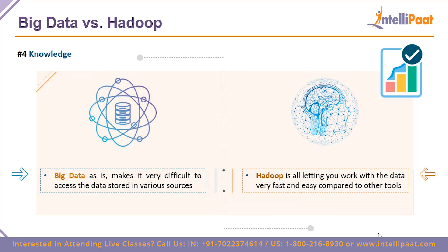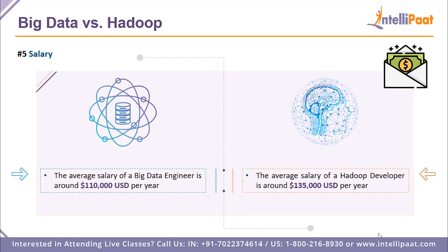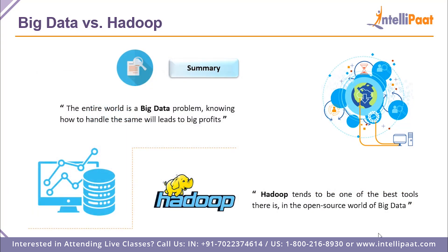In terms of techniques, big data is mainly concerned with data analytics and data analysis. Hadoop makes use of HDFS to maintain and store data, requiring computational processing power. Regarding knowledge and accessibility: big data is extremely difficult to access from multiple sources throughout the globe, but Hadoop lets you work with this data very fast — working in parallel, processing in batches — much more easily compared to other tools.